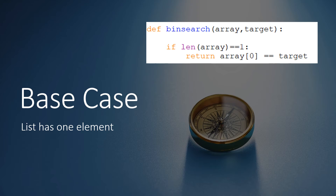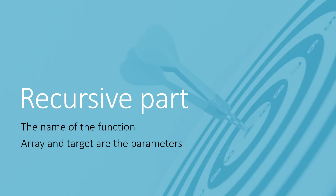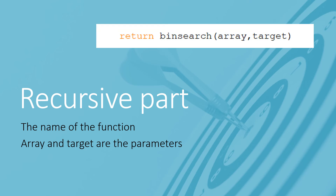Now we have to add the recursive final line to the function. In the recursive part we'll write the name of the function, and remember we have to pass the array and the target value as parameters. The final line of your recursive function is the word 'return', the name of the function, and the two parameters.